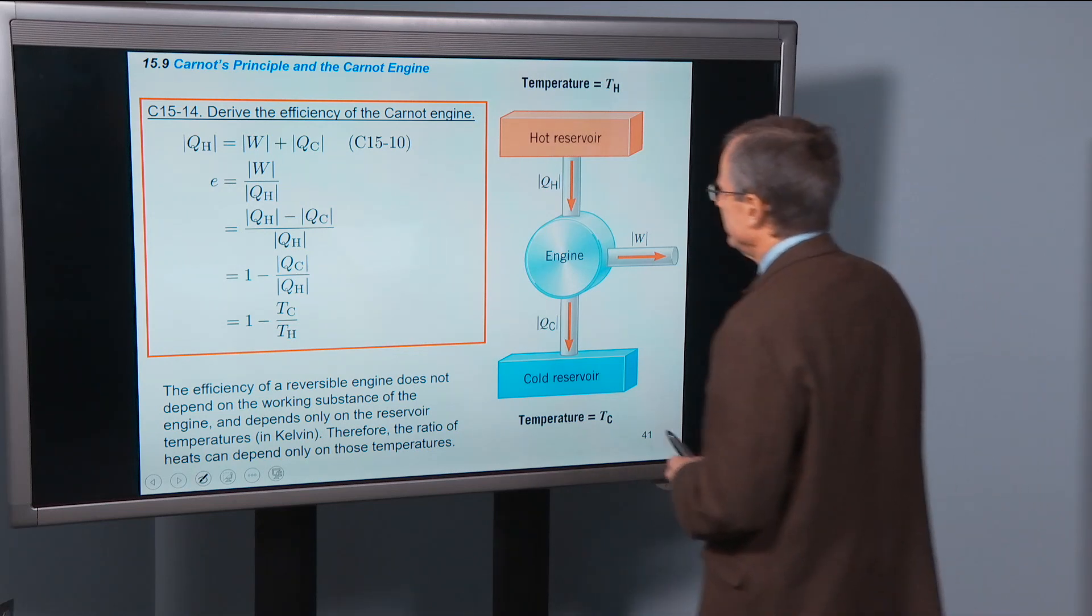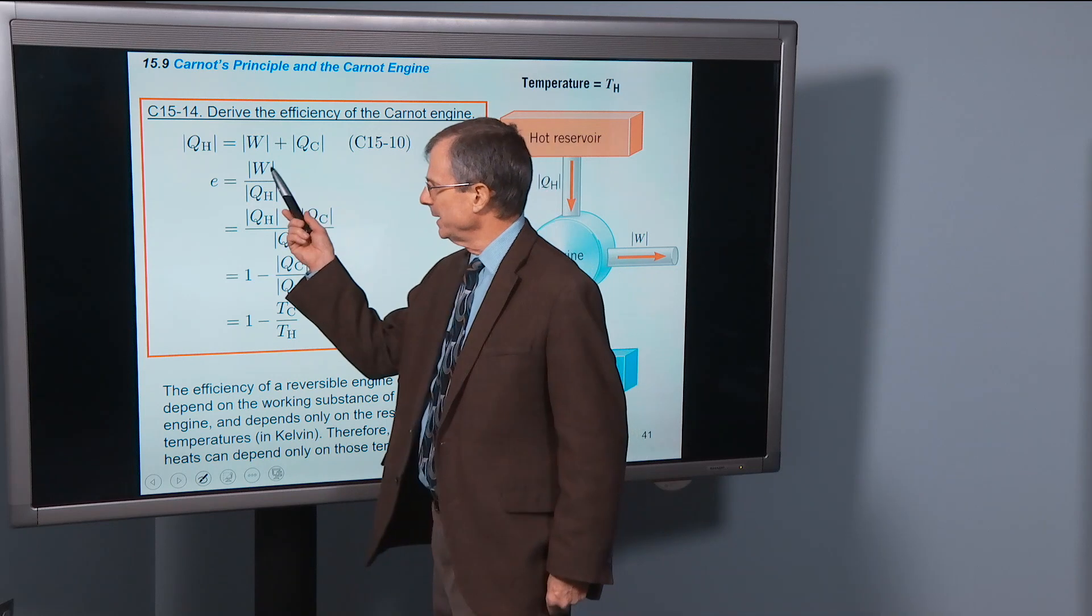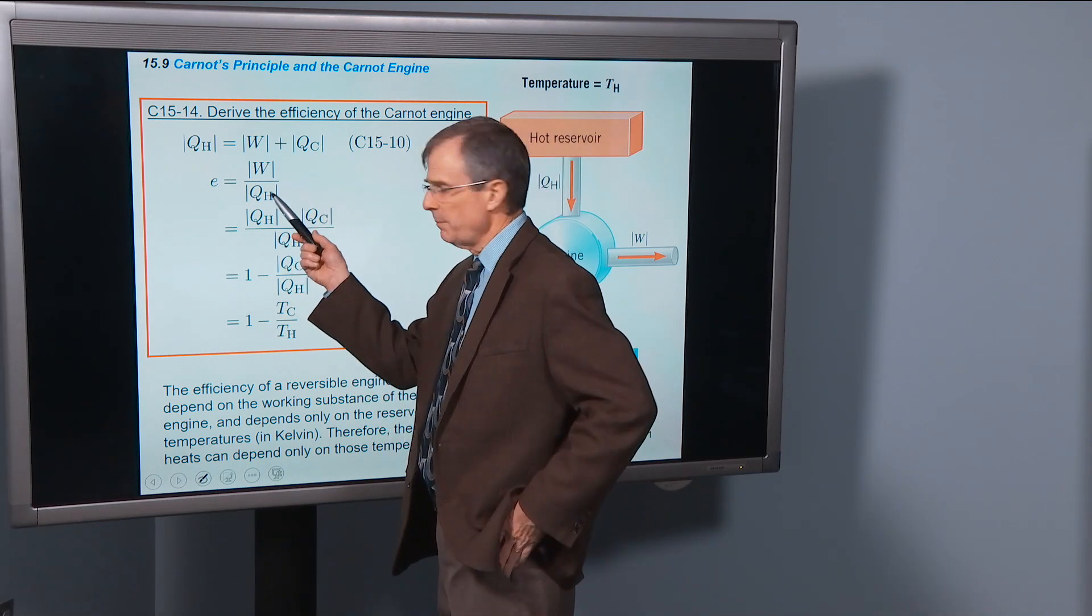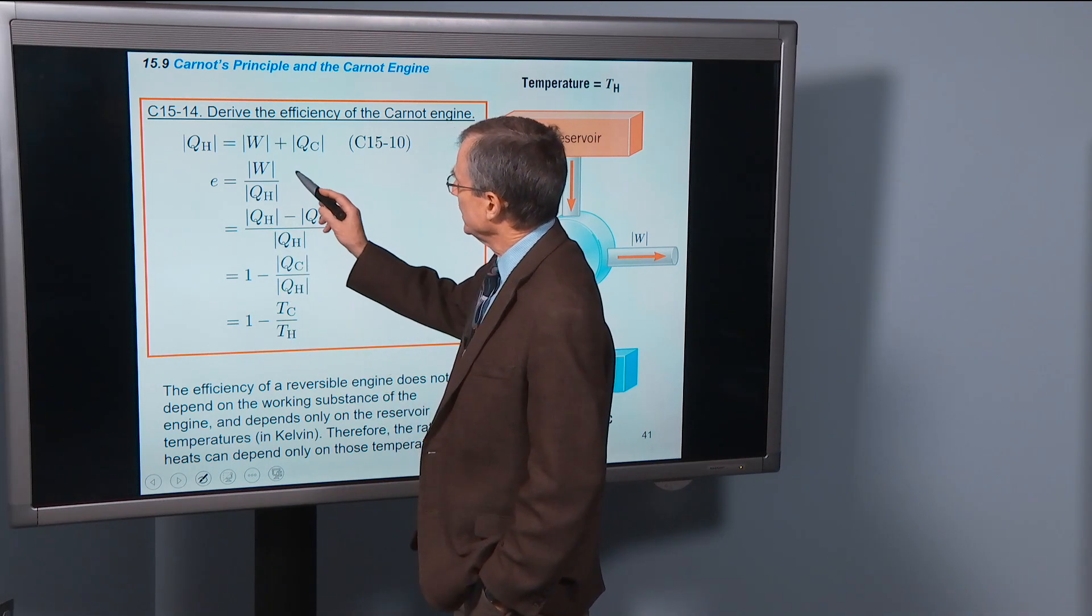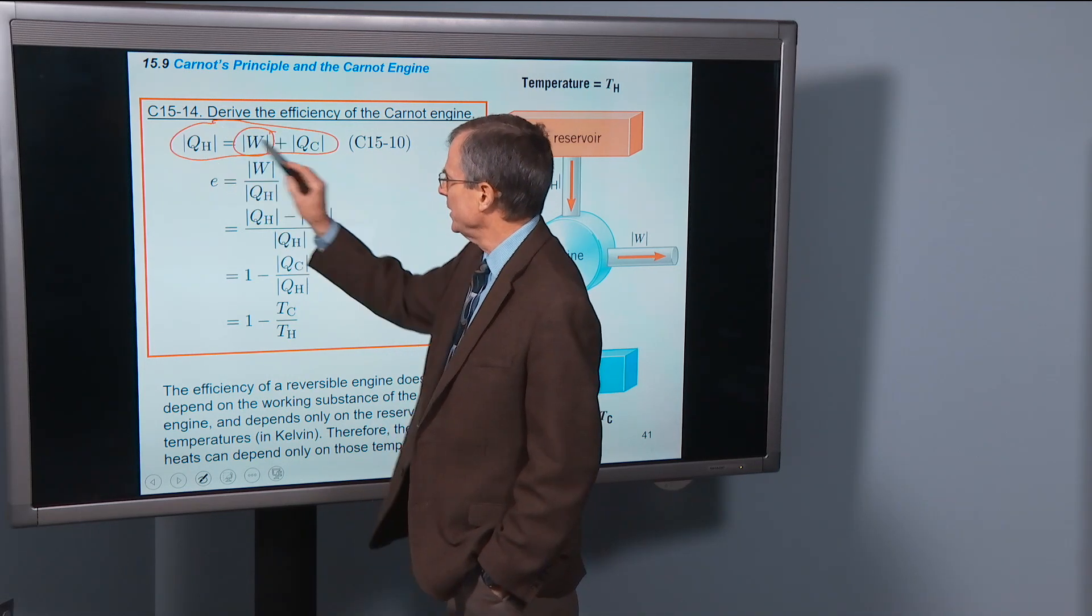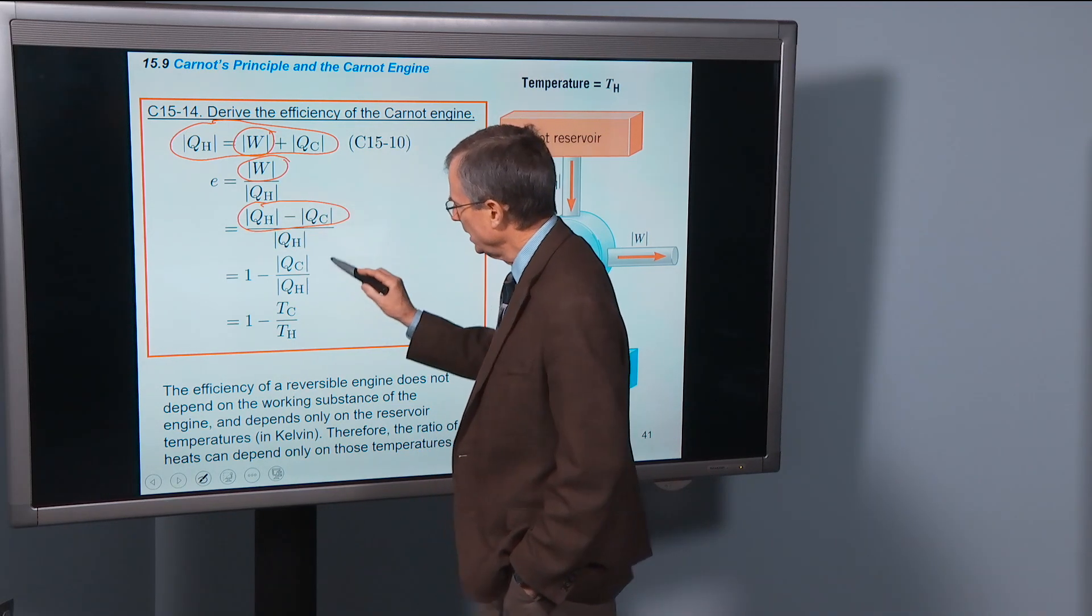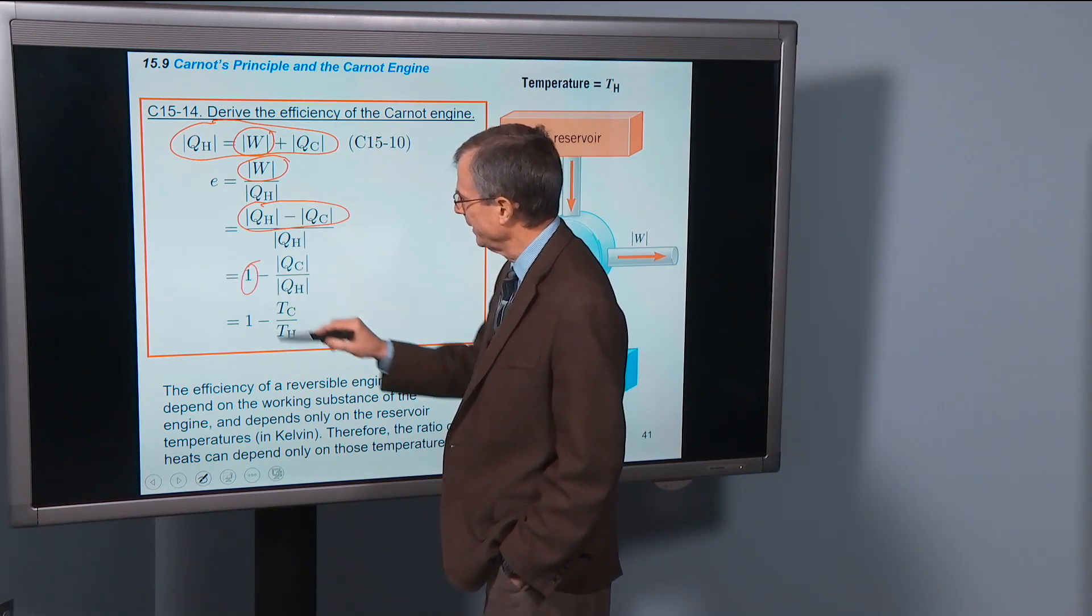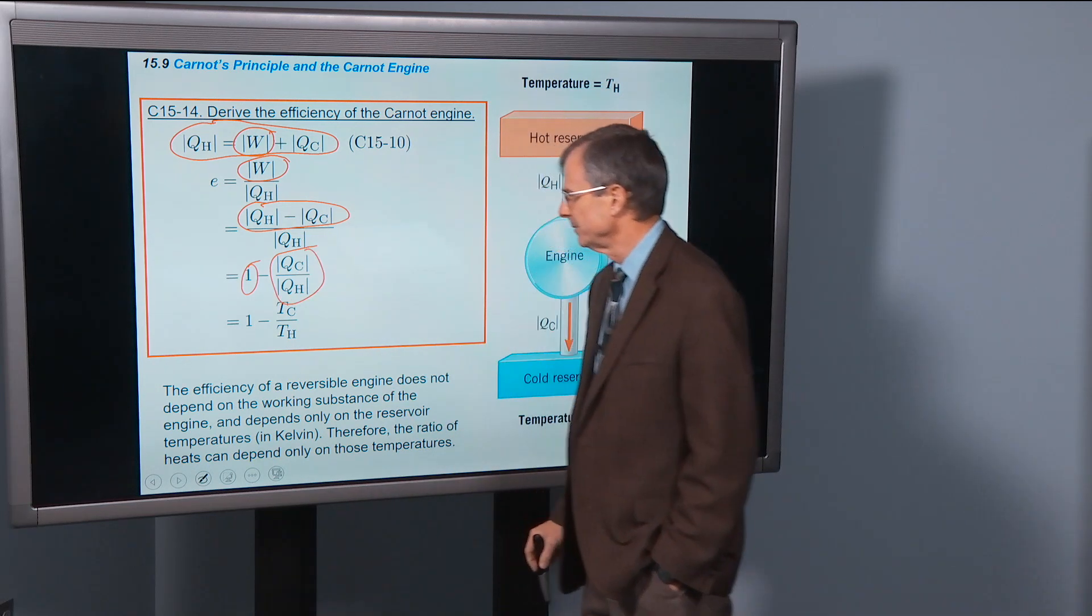Let's derive the efficiency of the Carnot engine. Efficiency of an engine is the work done, that's what we're trying to get, as much work out of it as possible. We're trying to minimize the amount of input heat. And we can solve this equation for W. So W is going to be QH minus QC. So here's that W, it's QH minus QC, and we're dividing everything by QH. So QH over QH is just one. QC over QH is QC over QH.